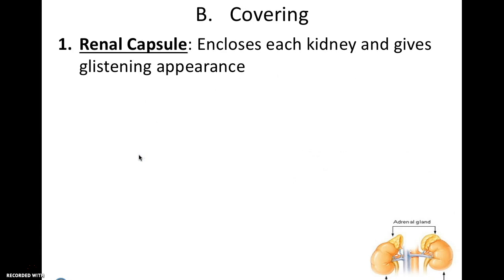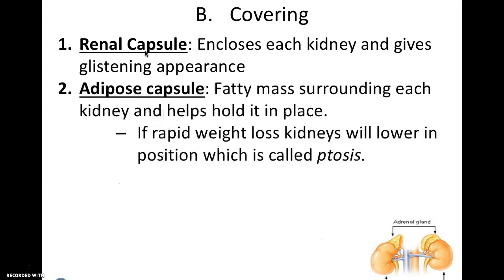On top of each kidney, it starts with a renal capsule. A capsule — like the outside part of a pill — encloses each kidney and gives it a glistening appearance, which you'll definitely see inside the rabbit. There is also some fat in that region; the fatty mass around each kidney helps hold it in place. If you have any rapid weight loss, your kidneys will actually lower in position, causing a condition called ptosis.